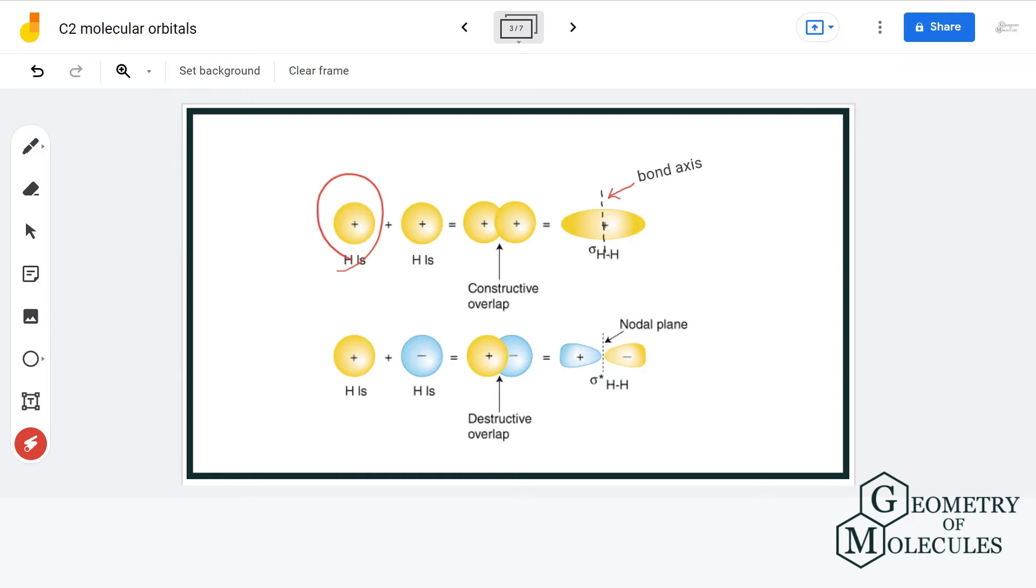Say for example, in hydrogen molecule, each hydrogen atom has one s orbital. So when two hydrogen atoms combine or you can say when they bond, two molecular orbitals will be formed. One will be bonding and the other will be anti-bonding molecular orbital.